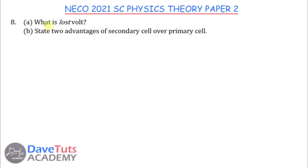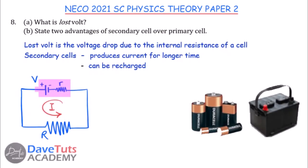Lost volts is a voltage drop due to the internal resistance of a cell. The cell has an EMF V and internal resistance r. The total voltage equals current multiplied by internal resistance plus current multiplied by the load resistance. The lost volts is the product of current and the internal resistance of the cell.